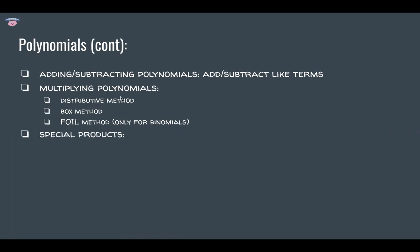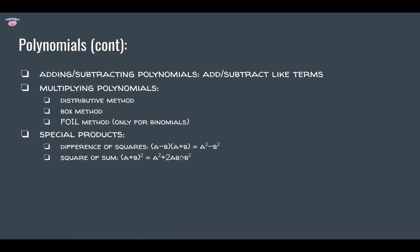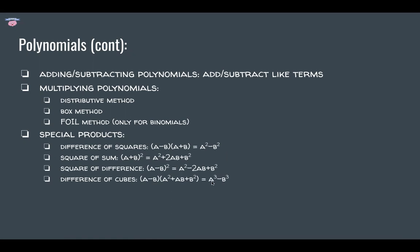Special products make multiplication extremely easy if recognized. The difference of squares: a squared minus b squared equals (a minus b)(a plus b). The square of a sum: (a plus b) squared equals a squared plus 2ab plus b squared. The square of a difference is similar but with minus 2ab, while a squared and b squared remain the same. Difference of cubes: a cubed minus b cubed equals (a minus b)(a squared plus ab plus b squared). Sum of cubes: a cubed plus b cubed equals (a plus b)(a squared minus ab plus b squared). It's extremely important to memorize these.